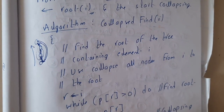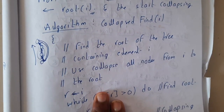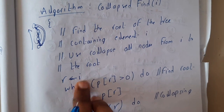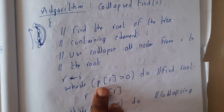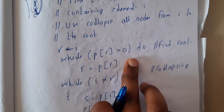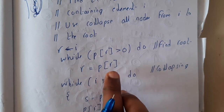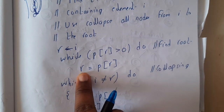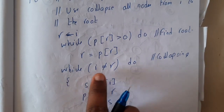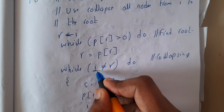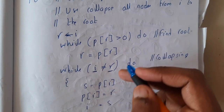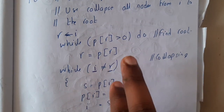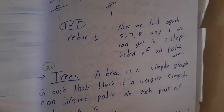So the collapse algorithm: you initialize the i value — the value you want to search — storing it in r, and you find the root using a while loop: while p of r is greater than zero, store p of r back in r. This gives you the root. After that, moving from i to r — while i is not equal to r — you continue collapsing. Once both are equal, all intermediate elements have been collapsed.